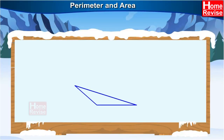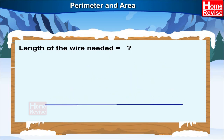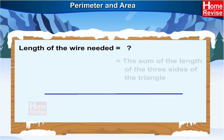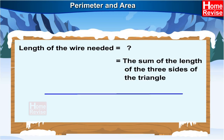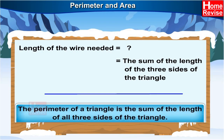This is a triangle made of wire. To find out the length of the wire needed to make it, we will straighten out the wire and measure its length. This length will be the sum of the lengths of the three sides of the triangle. The perimeter of a triangle is the sum of the lengths of all three sides of the triangle.